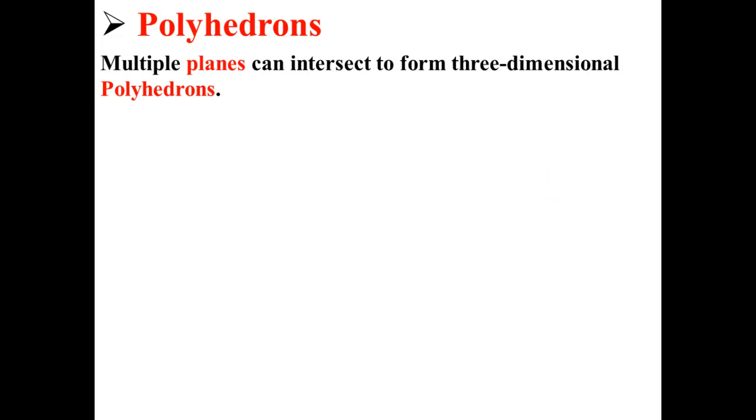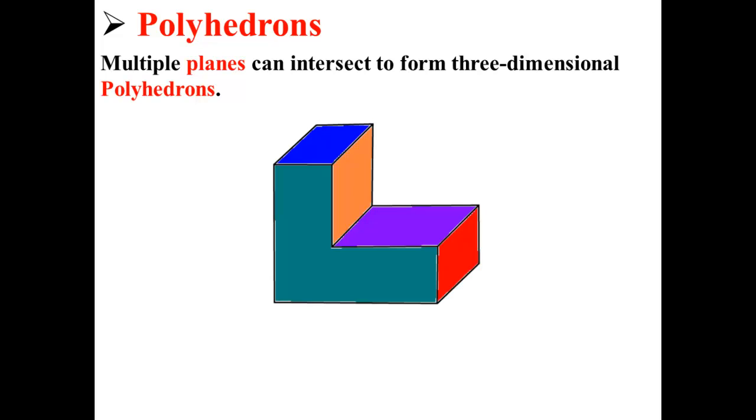Multiple planes can intersect to form three-dimensional figures called polyhedrons. Here we have an example of one. As you can see, this shape is made up of multiple planes: the blue plane, the orange plane, the purple plane. They're all different planes that connect and intersect.